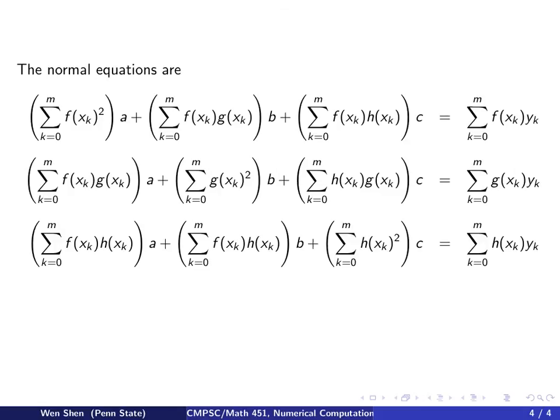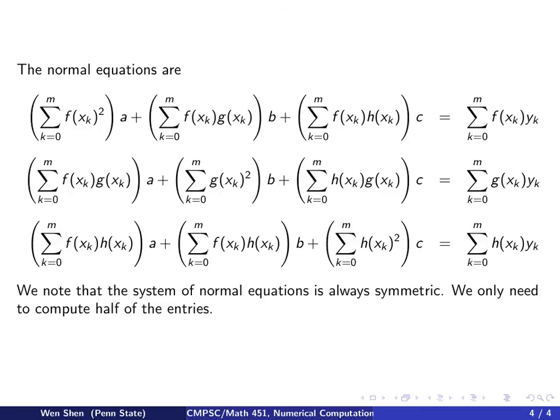These equations are called the normal equations. And taking a look at this three-by-three system, we see that the term here is the same as the term here, and the term here is the same as the term here, and the term here is the same as the term here.